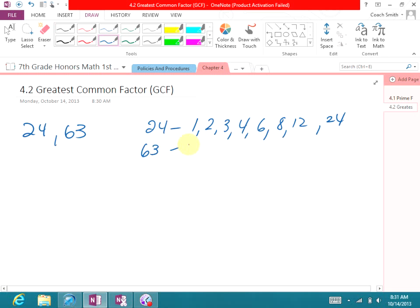For 63, we have 1, 3, let's see, 7, 9, 21, 63. Obviously, every single number has 1 as a common factor. So, if 1 is the only number that they share, then we call that relatively prime. That is not the case in this example.